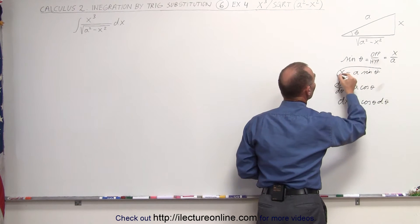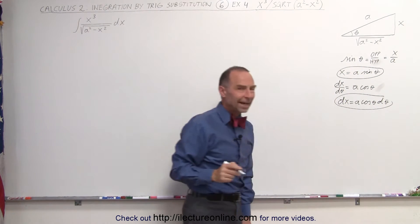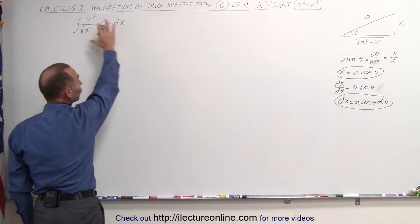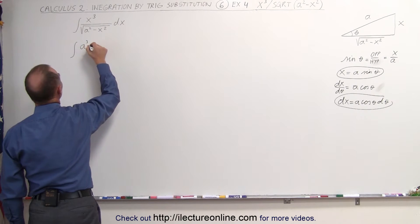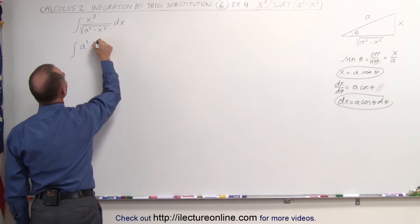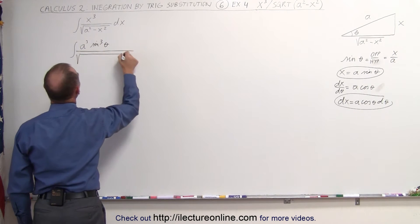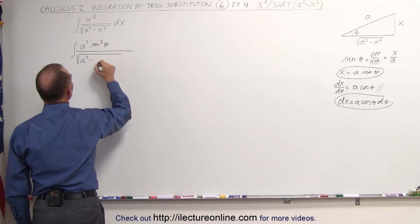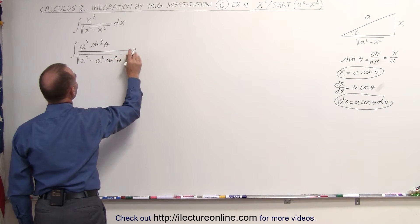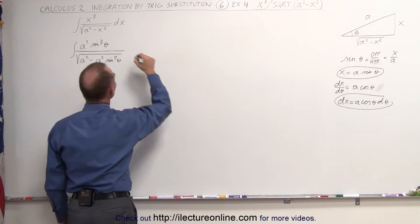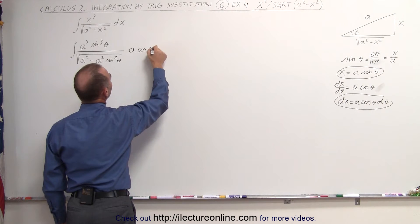Now we have everything we need to substitute into our integral for x and for dx. x cubed now becomes the integral of a cubed times sine cubed of theta. In the denominator, we get the square root of a squared minus a squared times sine squared of theta, and dx can now be written as a times the cosine of theta d theta.